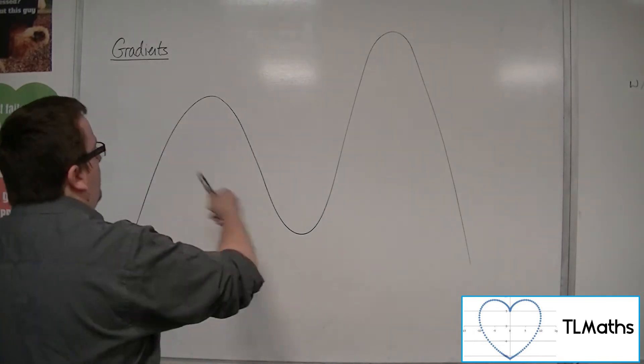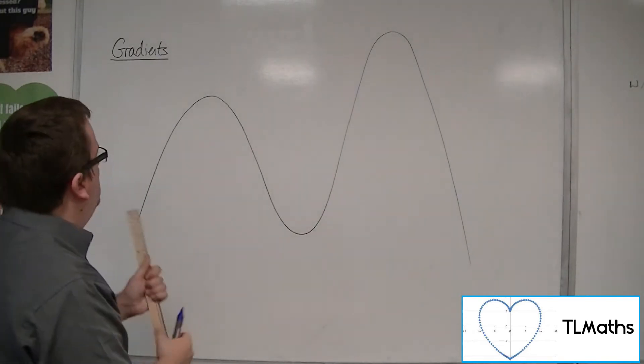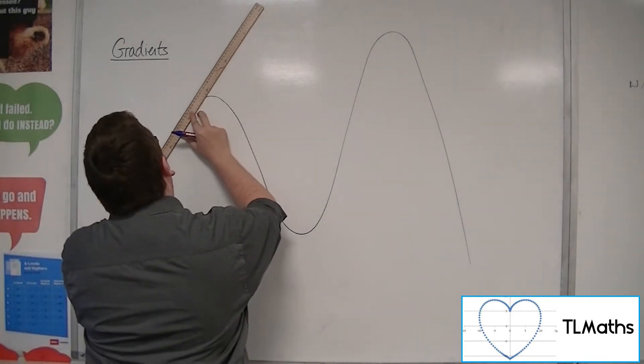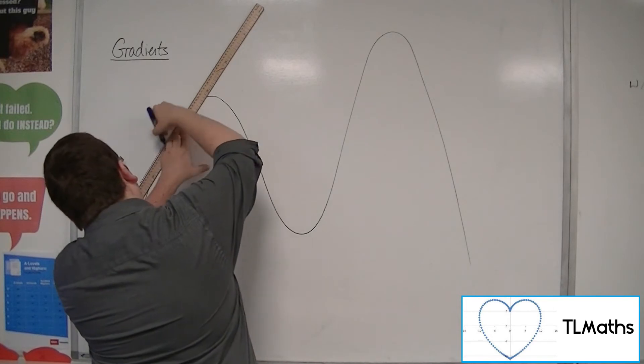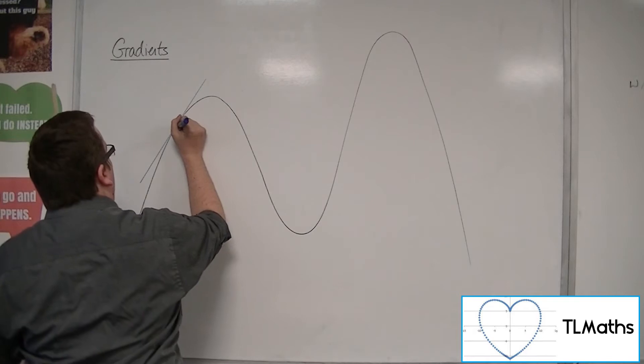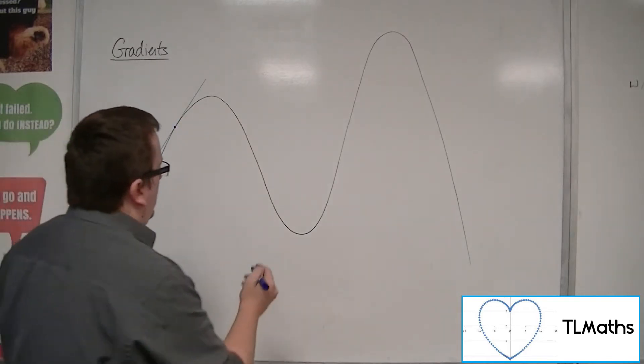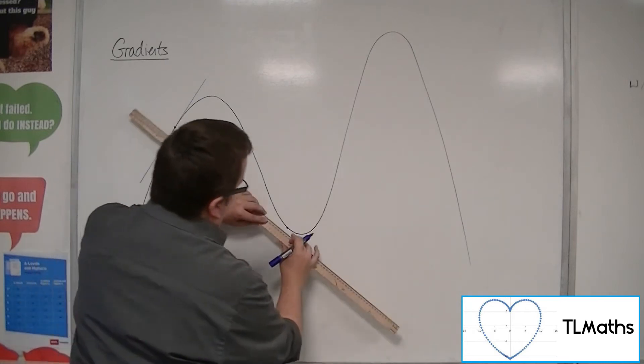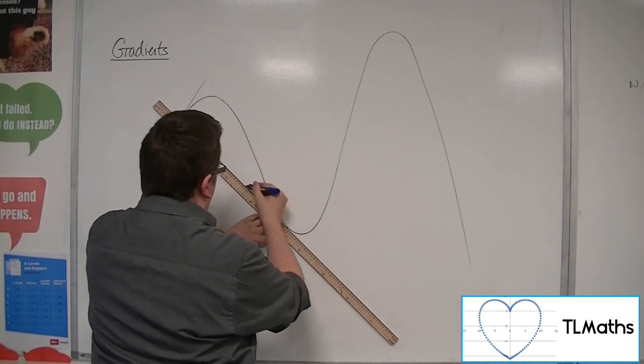So if I've got any old curve, right, then what I mean by a tangent line is one that will just brush the curve at one particular point. Okay, so that would be a tangent line for that point. Let's say I wanted the tangent line for that point. So that would be this line here.